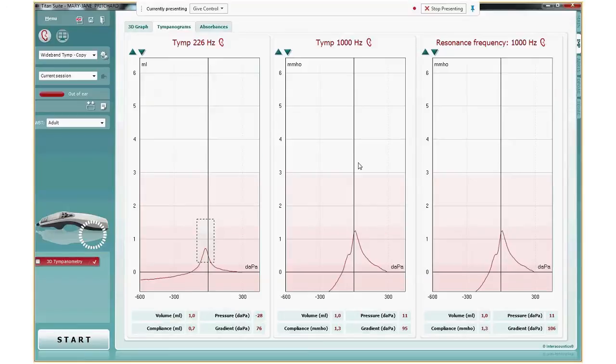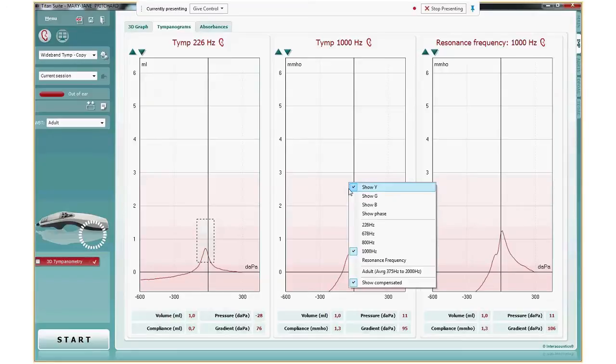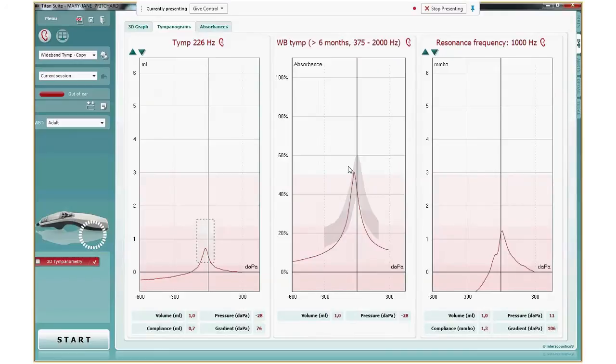What we can also show is a new type of tympanogram. I right mouse click on the middle graph. And then I select the adult, the average between 375 up to 2,000 hertz. And here we see a wideband averaged tympanogram. To explain what a wideband averaged tympanogram is, I need to switch back to my presentation.